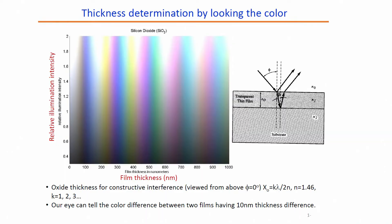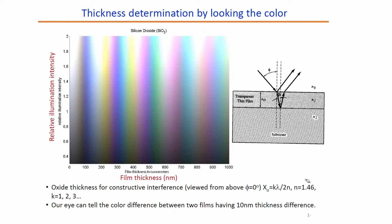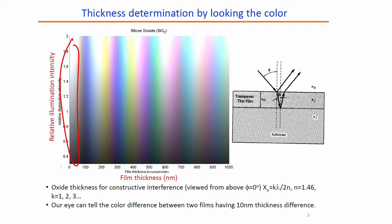In some cases silicon dioxide is just used as an insulating material between two layers and it does not matter if it is 1 micron, half micron, or 250 nanometer — in that case you can just use your eye to understand whether silicon dioxide is there or not. As I said, our eye can measure the color difference of about 10 nanometer thickness. Looking at the slide, you can see relative illumination intensity versus film thickness — as the thickness increases the film becomes darker, dark green in color, while for thin films it is close to light gray, similar to the silicon wafer.